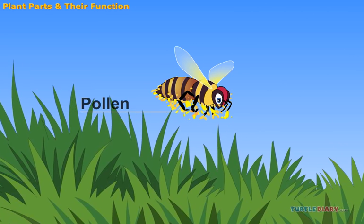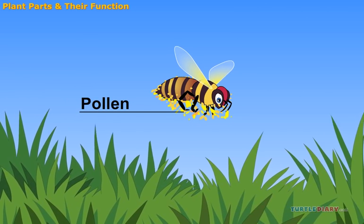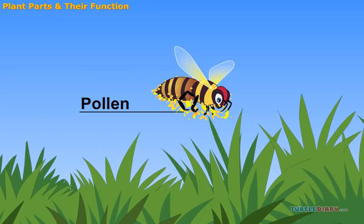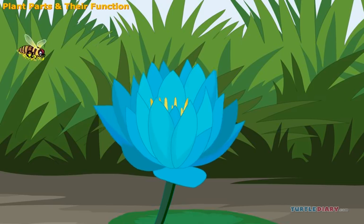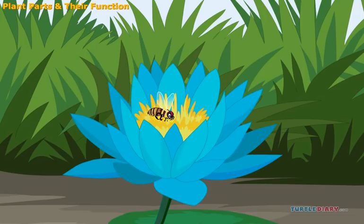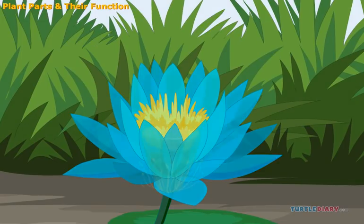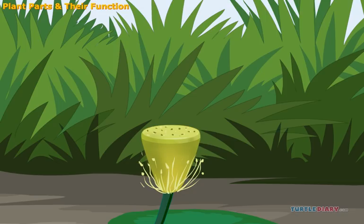This bee will get pollen stuck to the bee as he gets sweet nectar for his lunch. When he goes to another flower for more nectar, some of that pollen will drop off of him. The pollen enters another flower and fertilizes the egg cells. Thus, seeds are formed.